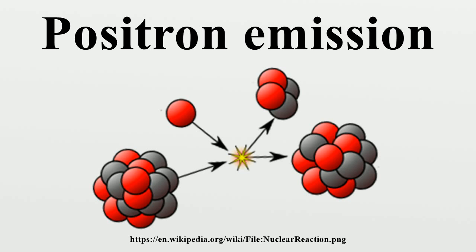Positron emission should not be confused with electron emission or beta-minus decay, which occurs when a neutron turns into a proton and the nucleus emits an electron and an antineutrino. Electron capture is also occasionally classified as a type of beta decay.